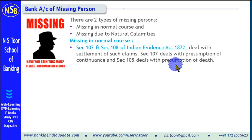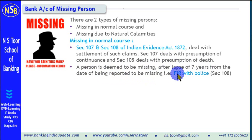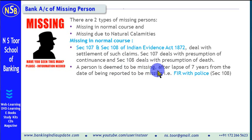If a person is missing for a long period, then it may be presumed that the person might have died. Whenever a person is missing for at least 7 years from the date of being reported to police by way of NFIR, he will be treated to be a missing person. So, a missing person is one who is not traceable after the lapse of 7 years from the date when he was reported to be missing.